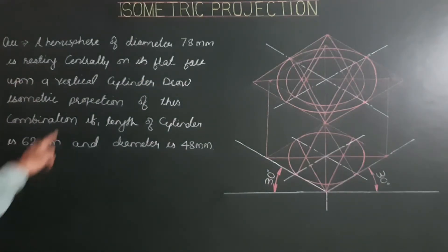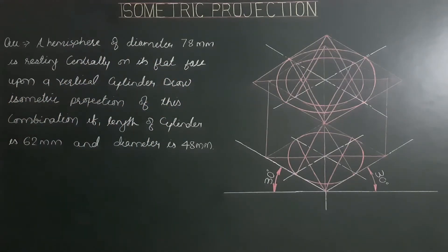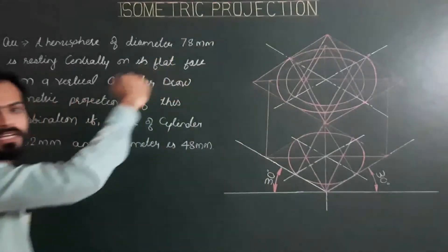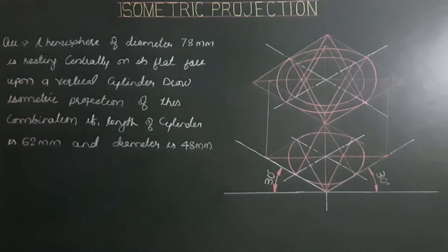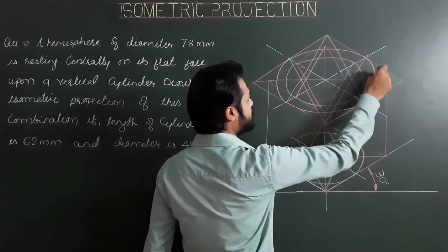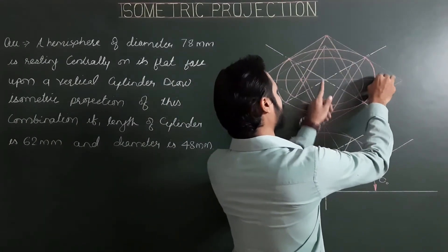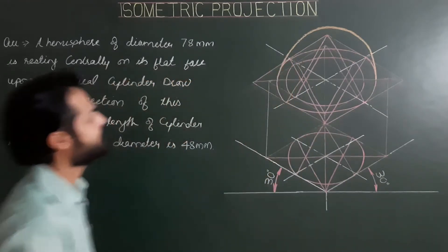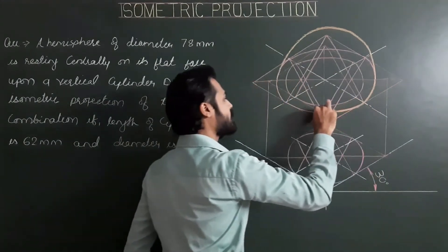Now we have the circular base of the hemisphere resting centrally on the flat face of the vertical cylinder. In the last step of construction, we draw the upper curved portion of the hemisphere. The center and radius are identified at the intersection point of the curved part and diagonal. Draw a dark semicircle for the upper part — only the front portion of the hemisphere is visible.